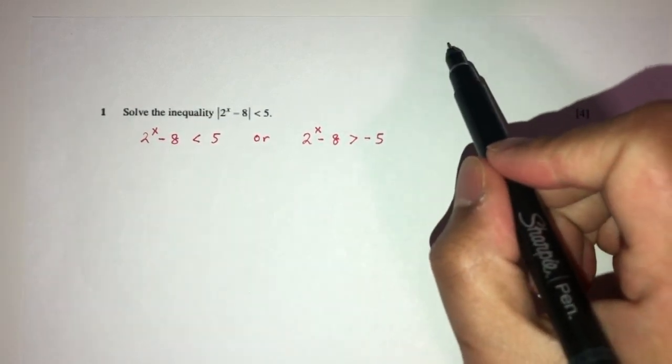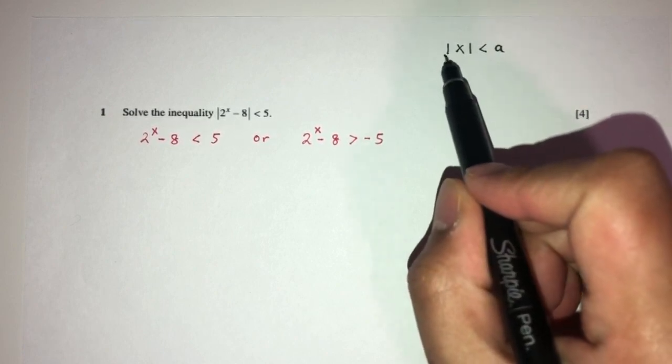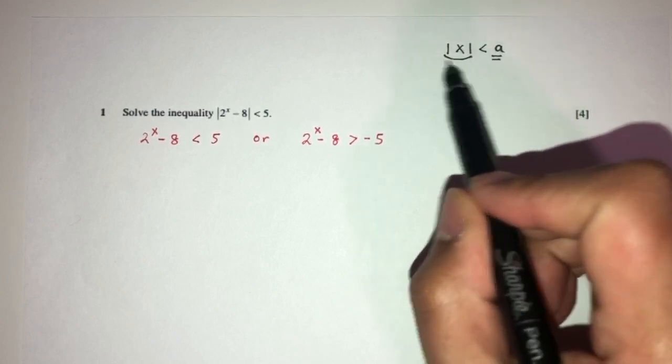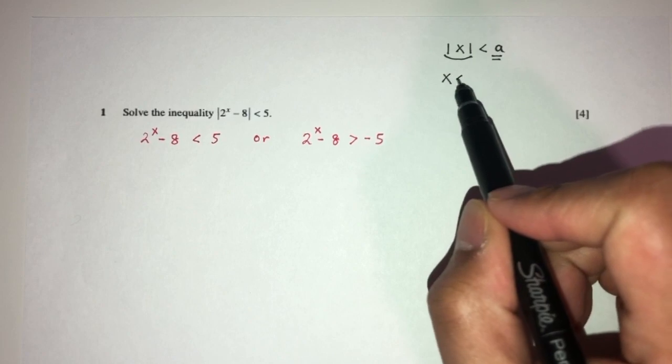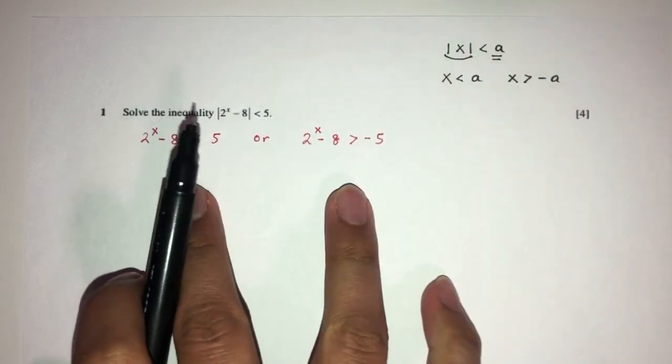So let me write this down again. Let's say you had a modulus of x less than 8. Well, given this is modulus of x, and here we don't have x, we can break this down as x is indeed less than 8, or x is more than minus 8. So same method we'll apply here.